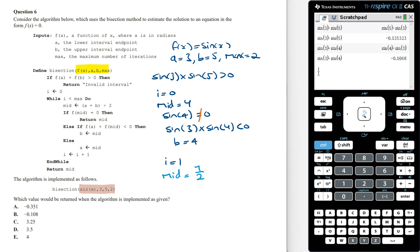We've got if f of mid is equal to 0, then return mid. f of mid is going to be sin of 7 on 2, and we know that this is not going to equal 0. So going to the next step.